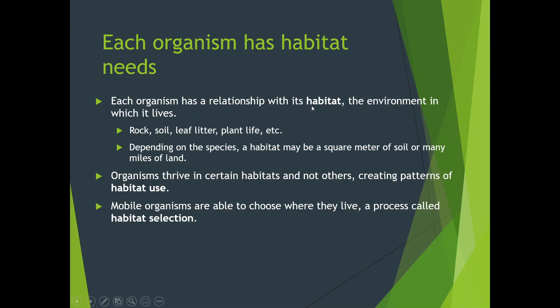Each organism has a relationship with its habitat — the environment in which it lives. It can live in rocks, soil, leaf litter, plant life, etc. Depending on the species, a habitat may be a square meter of soil or many miles of land — elephants roam acres and miles of land while a worm lives in one little area. Organisms thrive in certain habitats and not others, creating patterns of habitat use. Mobile organisms can choose where they want to live — this is called habitat selection.